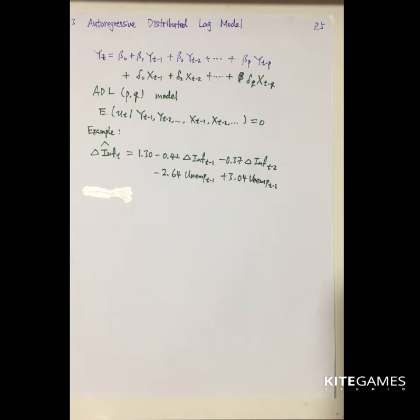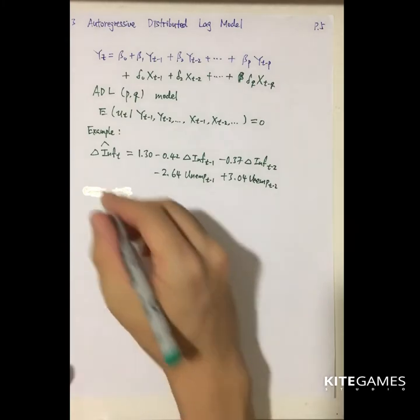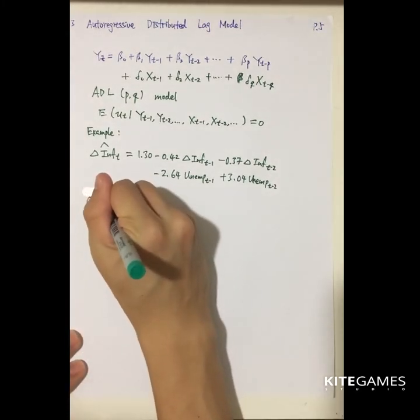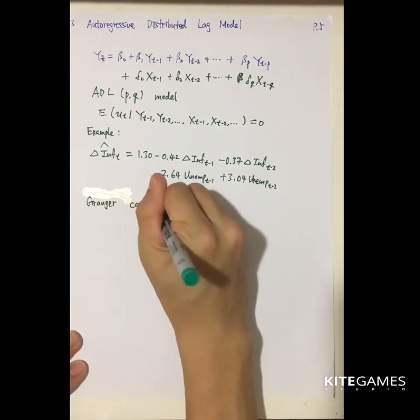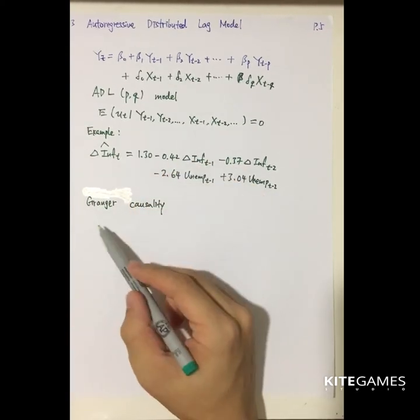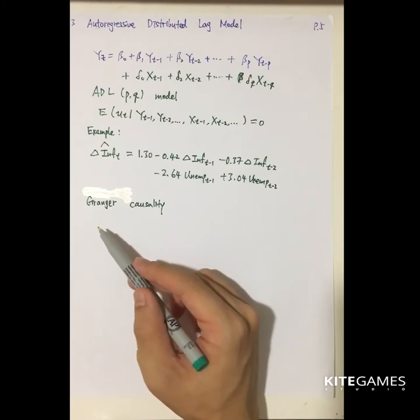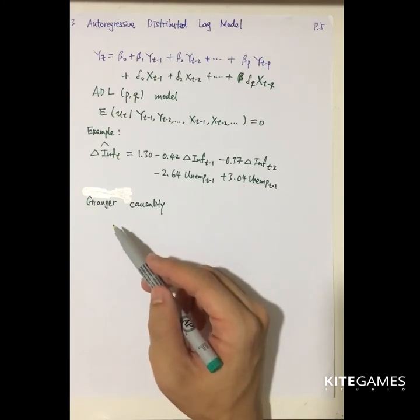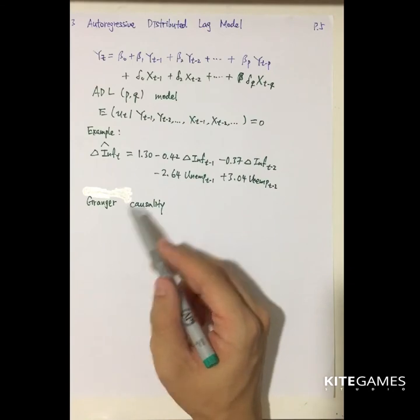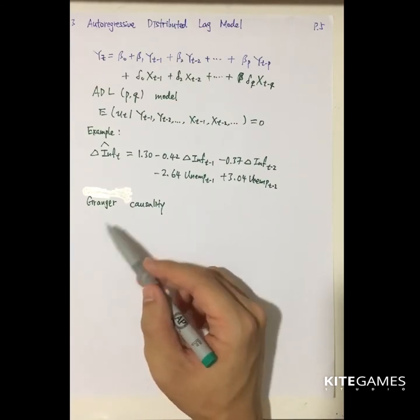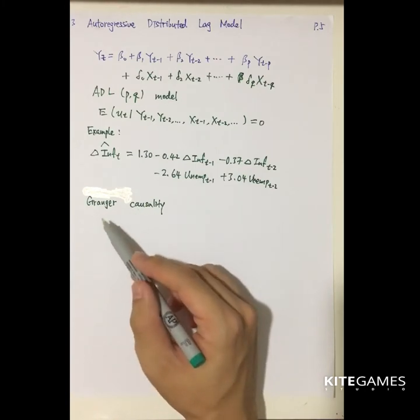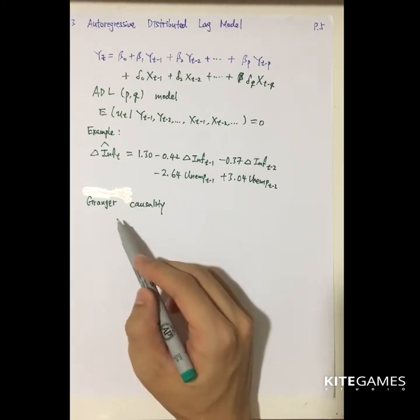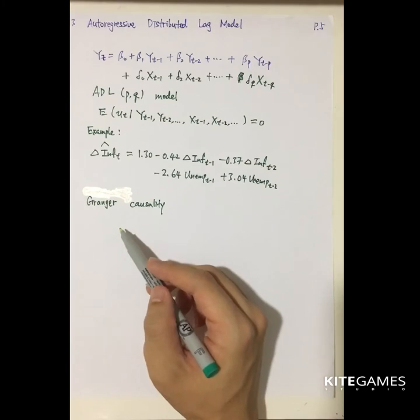Before we move on, I will introduce you one jargon in time series econometrics, which is called Granger Causality. Granger is a very famous economist, so many universities just name him to memory him. For example in HKUST we have a cohort called Granger, so that Granger is this Granger.